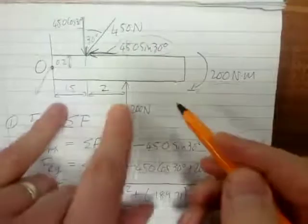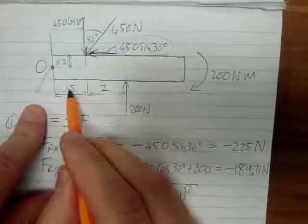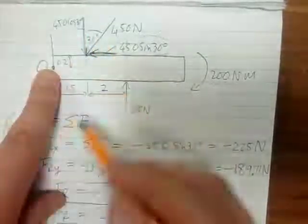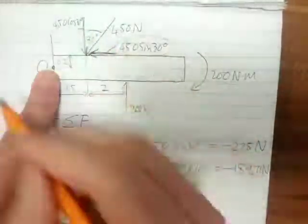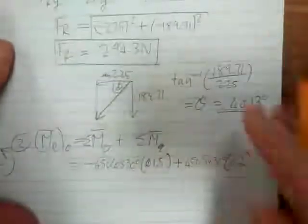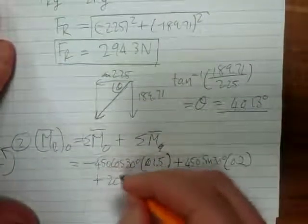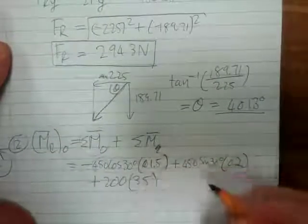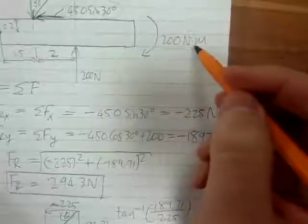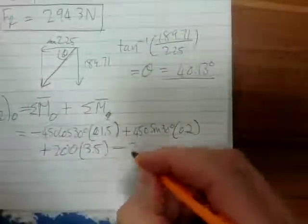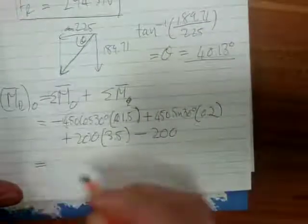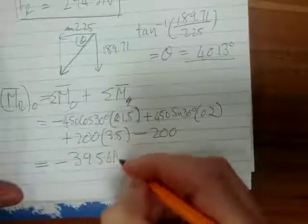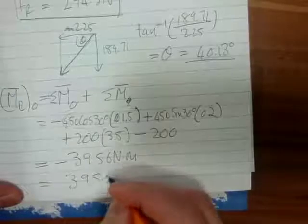Then I've still got the 200N force — I can immediately determine its moment. Its moment arm is the perpendicular distance 2 plus 1.5, giving 3.5. It will go anti-clockwise, which means it's positive, so I add plus 200 times 3.5. These are the moments due to the forces. Now I need to include the existing couple moment of 200 newton-meters clockwise, so that is minus 200. Adding this all up gives minus 39.56 newton-meters, or 39.56 newton-meters clockwise.